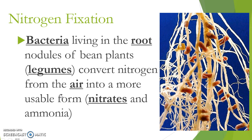Instead, we need a middleman — and that middleman is bacteria. Bacteria undergo nitrogen fixation, which means they are found on the roots of bean plants, which we call legumes — it could be a bean plant or a peanut. What they do is take atmospheric nitrogen from the atmosphere and convert it into a usable form that the plant can absorb. That usable form is called a nitrate, and an example would be ammonia — kind of like the cleaning product but not in nearly as high a concentration. So bacteria turn nitrogen into a usable form, the plant absorbs it, and then you eat the plant and get the nitrogen you need.